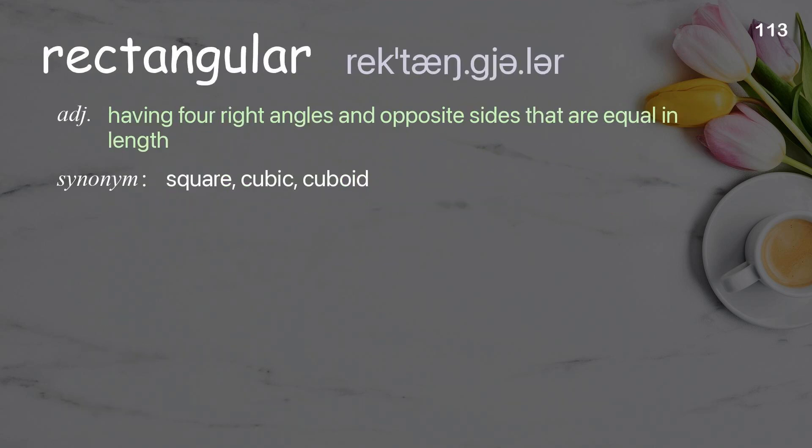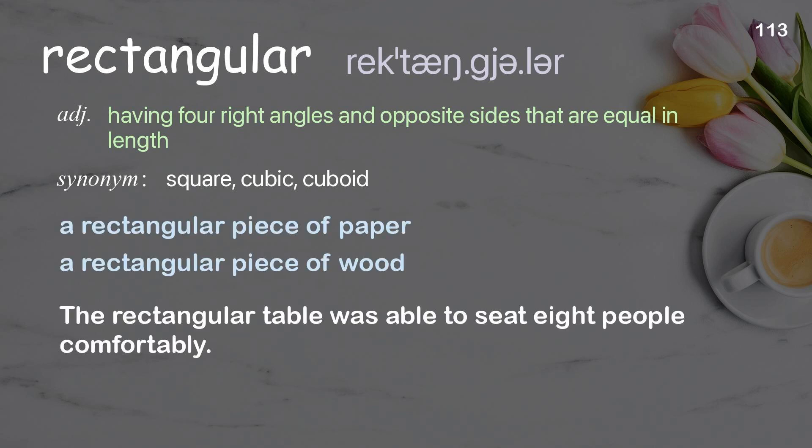Rectangular: having four right angles and opposite sides that are equal in length. Examples: a rectangular piece of paper, a rectangular piece of wood. The rectangular table was able to seat eight people comfortably.